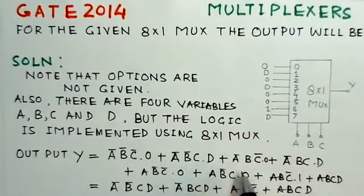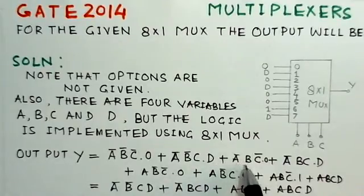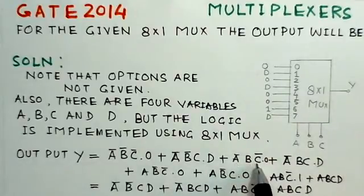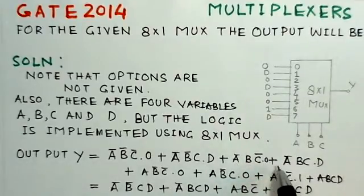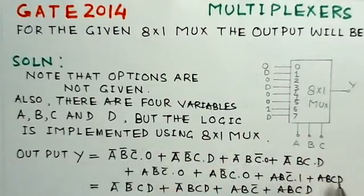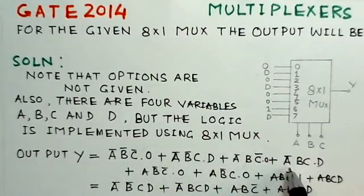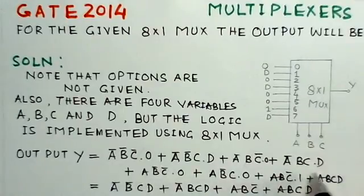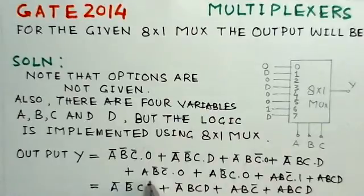Next would be A bar B C bar into zero. This will become zero, so this term, like this term, they will become zero. Then similarly you can write A bar B C dot D. Then next would be A B bar C bar zero.